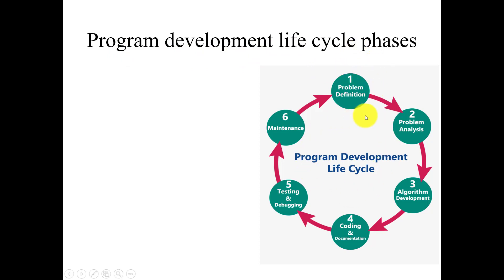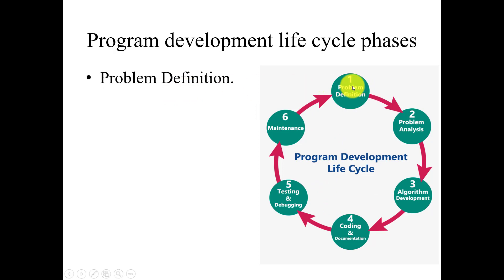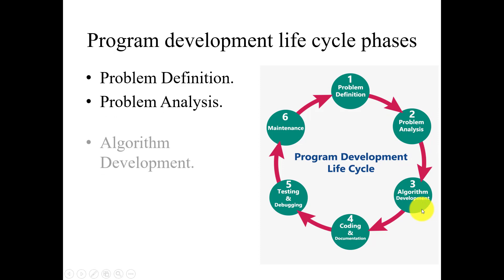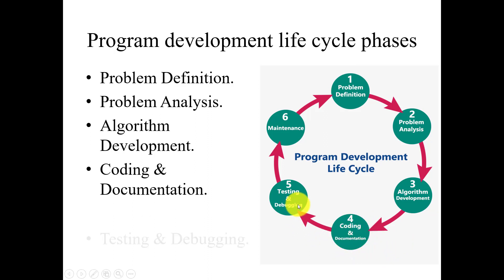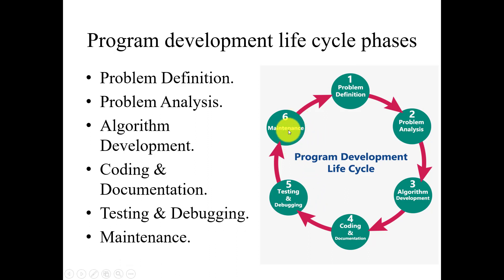In this diagram you can see there are six phases in the program development life cycle. The first phase is problem definition, second is problem analysis, third is algorithm development, fourth is coding and documentation, fifth is testing and debugging, and the last phase is maintenance. So there are total six phases included in the program development life cycle.